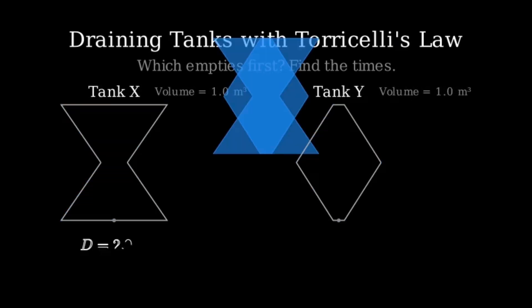We'll use Torricelli's Law, Continuity, and a mass balance to get a clean formula for the time. On the left is Tank X, shaped like an hourglass with a narrow waist in the middle. On the right is Tank Y, which bulges in the middle and is narrow at the bottom and the top. We'll fill both with the same initial water height of 1 meter, and we will let them drain through identical outlet holes of diameter 2 centimeters.